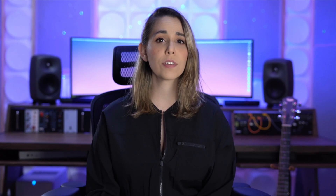We also wanted to mention a few known issues and some workarounds. Studio One users may experience CPU spikes when returning data from the GPU. The fix works within EAP buffer settings, 96 samples, 256 block as a starting point. Looping a track may or may not hiccup when the reverb tail is present. This will be fixed in late May before the June beta drop.